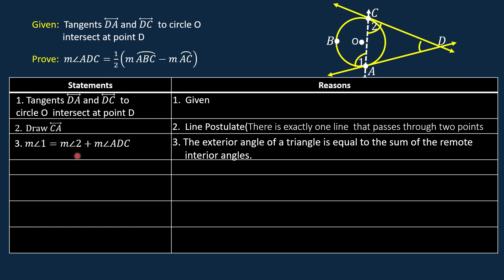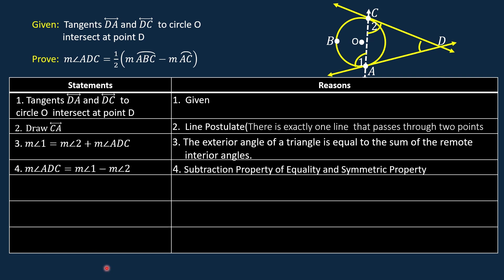If we subtract the measure of angle 2 from both sides in statement number 3, we get the measure of angle 1 minus the measure of angle 2 is equal to the measure of angle ADC. So for statement number 4, by the symmetric property of equality, the measure of angle ADC is equal to the measure of angle 1 minus the measure of angle 2. The reason is subtraction property of equality and symmetric property.